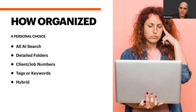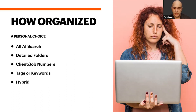How organized do you want to be? You can use AI search tools — tools like Xire work well for this. There are other tools that use artificial intelligence to analyze your images and add keywords based on that analysis. You could also use detailed folders to keep things organized, client and job numbers, tags and keywords, or a hybrid approach — all of those are quite good.